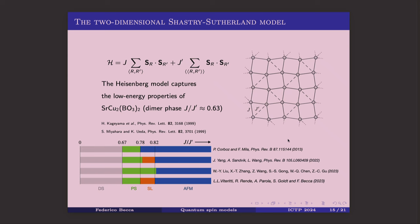Moving to 2D, the 1D J1-J2 model was a non-trivial benchmark because the Marshall sign rule is violated for J2 > 0 — the sign structure of the ground state is not known a priori. Using the complex RBM at the output, the transformer recovers the exact signs compared to exact diagonalization on small systems. This is a non-trivial but important verification before tackling 2D problems.